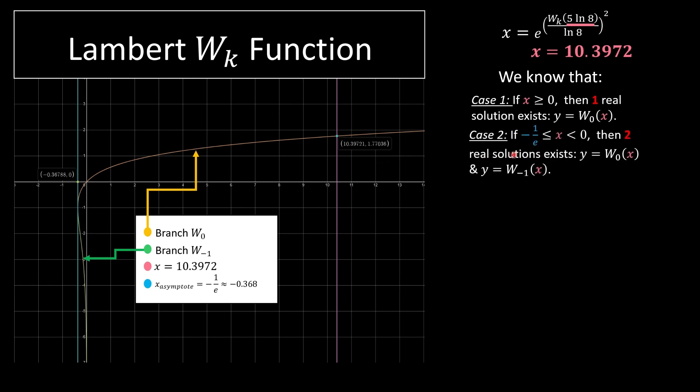So for case 2, let's say if we had a case 2, if the value was between negative 1 divided by e and between 0, there would be two real solutions. And if none of them are satisfied, then we have only complex solutions. So in our scenario, we have one real solution on branch W of 0.